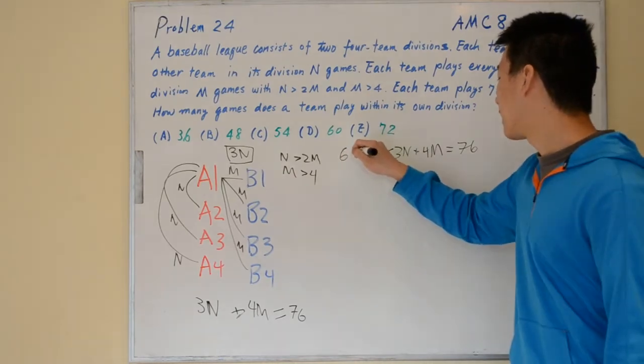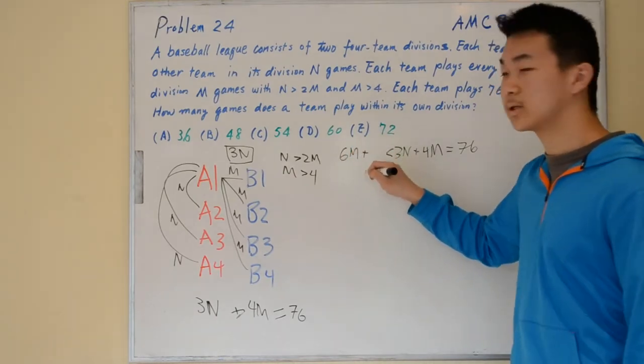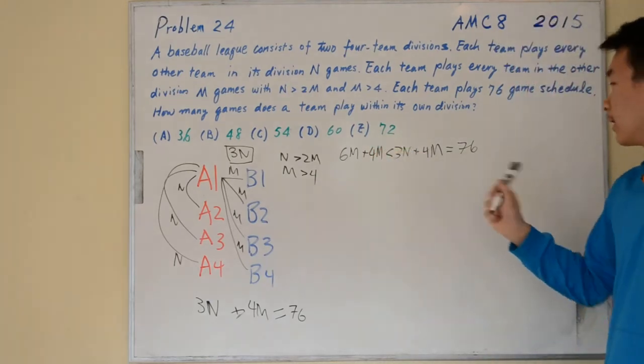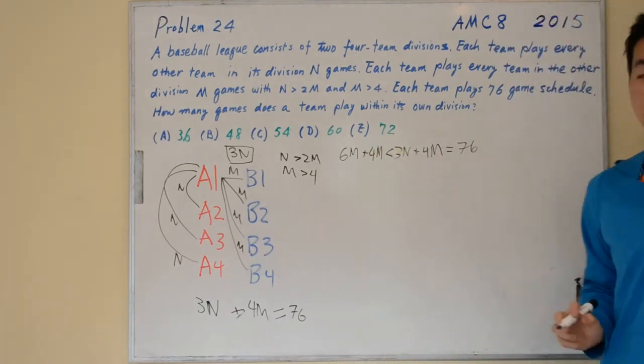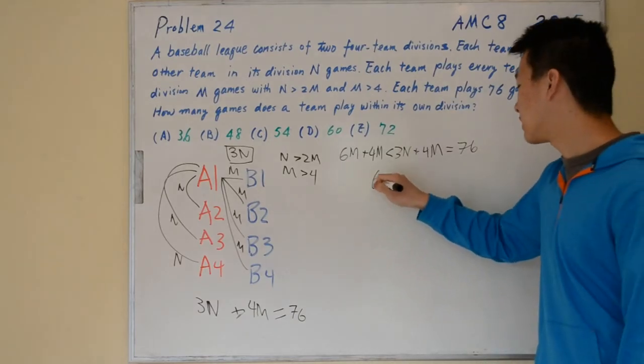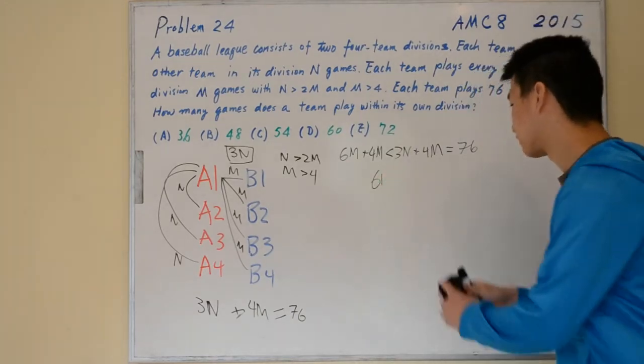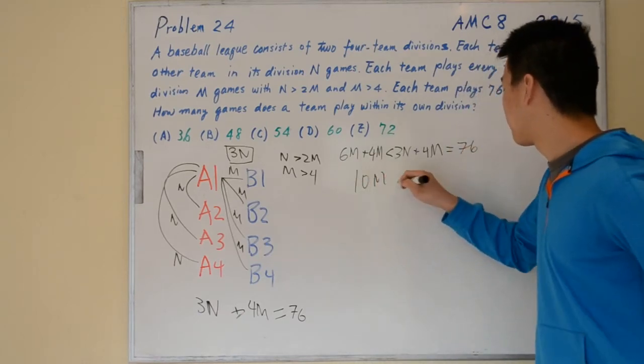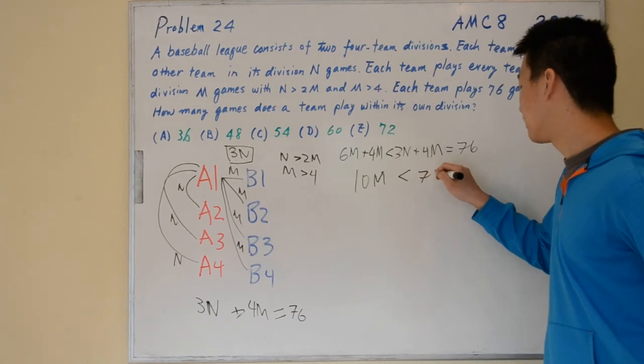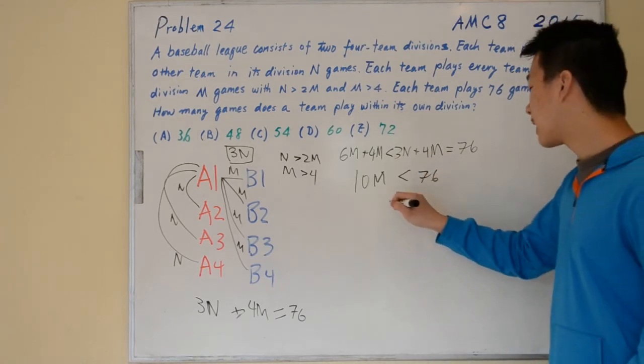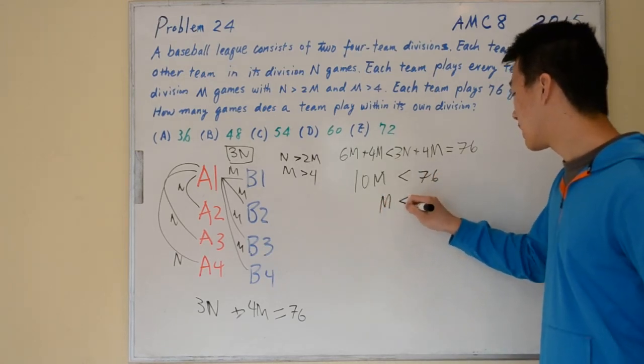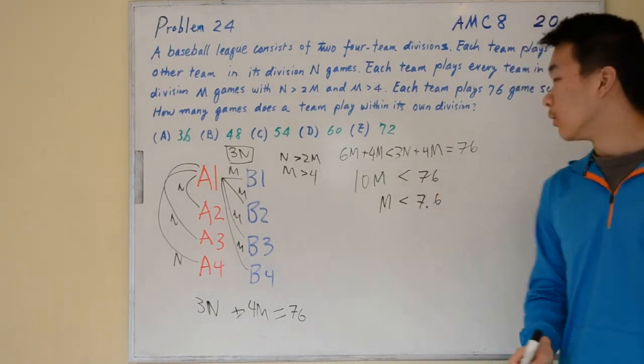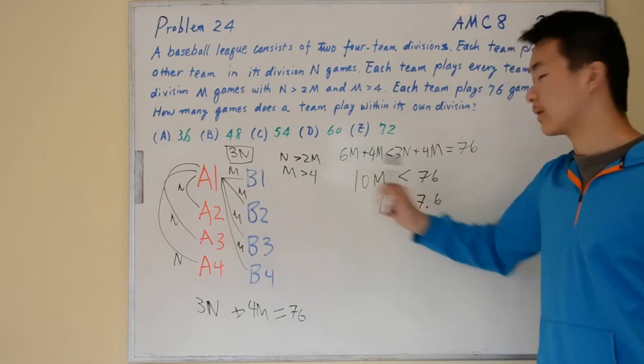So 6M plus 4M is less than 3N plus 4M, which equals 76. So 10M is less than 76, which means M is less than 7.6. We also know that M is greater than 4.